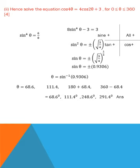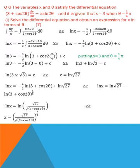We use the ASTC rule: All positive, Sin positive, Tan positive, Cos positive. If you learn the sentence 'Add Sugar To Coffee,' then you can easily remember the formula for all four quadrants.